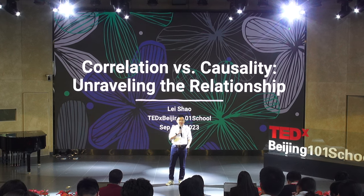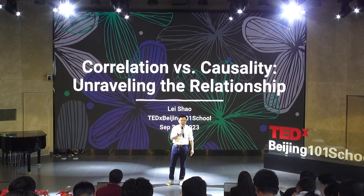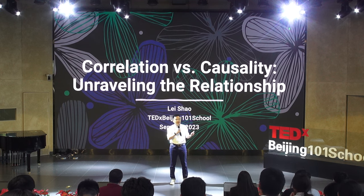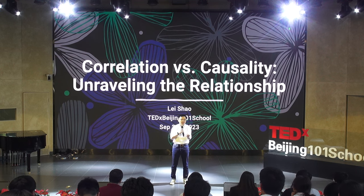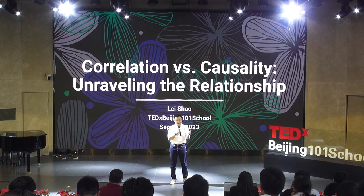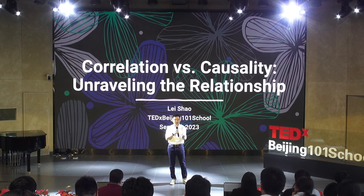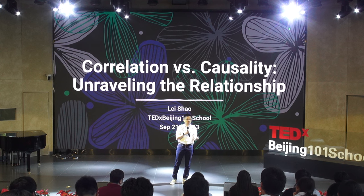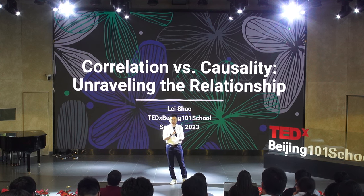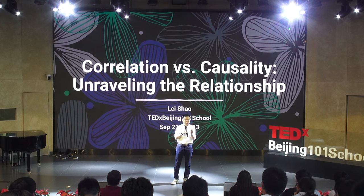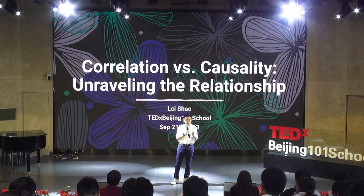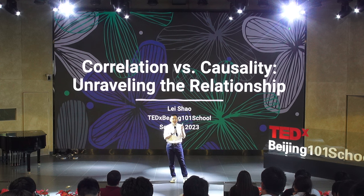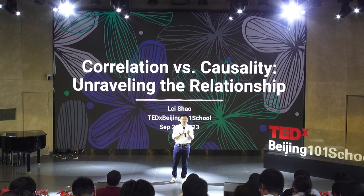What do we mean by correlation and causality? When we say A correlates with B, we mean that A and B often occur together. And if we say A causes B, it means A is the reason for the occurrence of B. It seems not difficult to differentiate between these two concepts, but it's crucial to really understand the difference in practice. Let me give you a few examples of how mistaking correlation for causality can lead to very wrong conclusions.